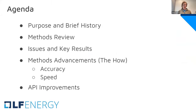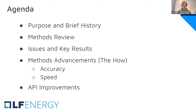In roughly an hour, we're going to cover: the purpose and brief history of the Open EEMeter — just what it is and why — then a quick methods review, followed by discussion of the issues we're addressing in Open EEMeter 4.0, along with key results. Then we'll talk about how we improved accuracy and speed. Finally, Jason has led a massive overhaul of the API and repository to make this effort much more readily accessible by any prospective user.